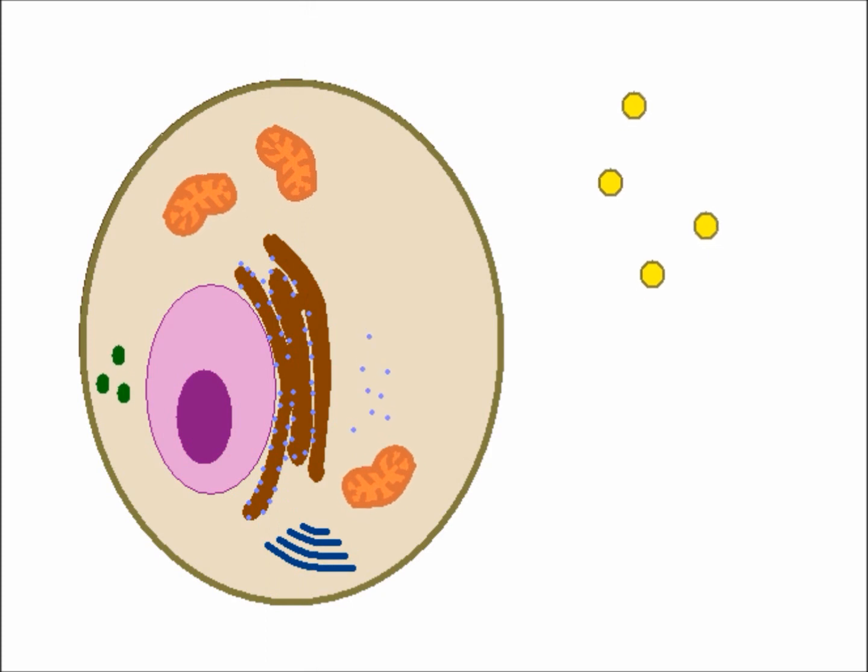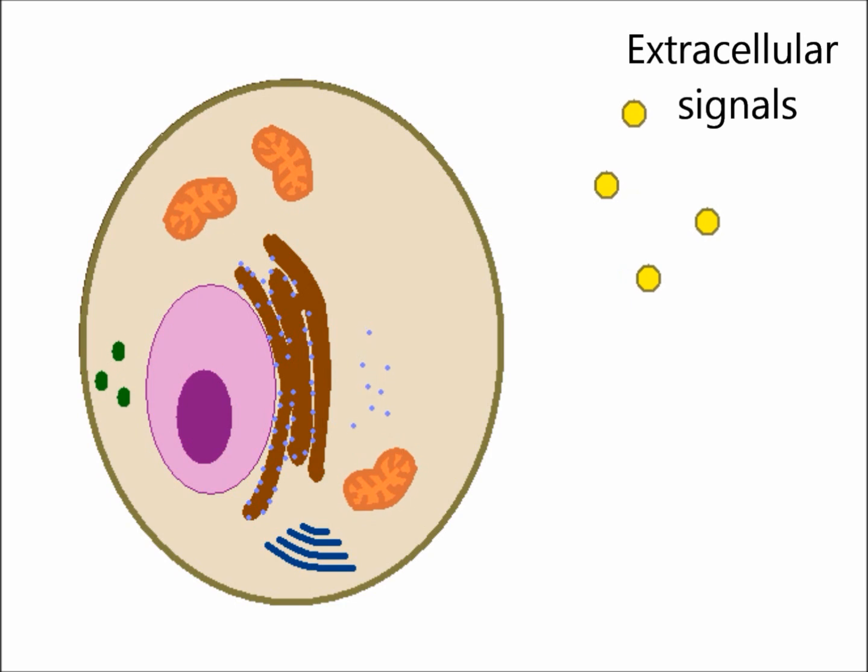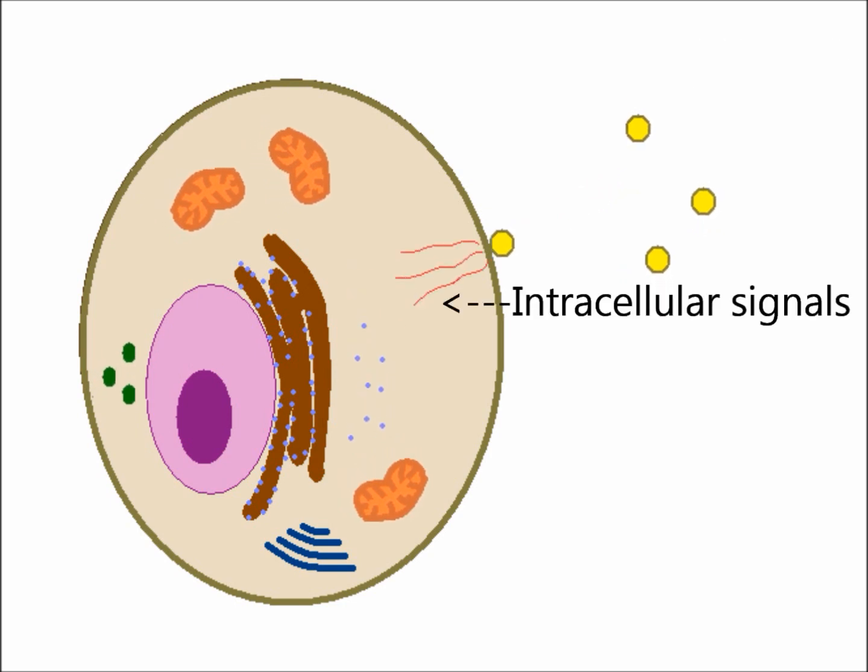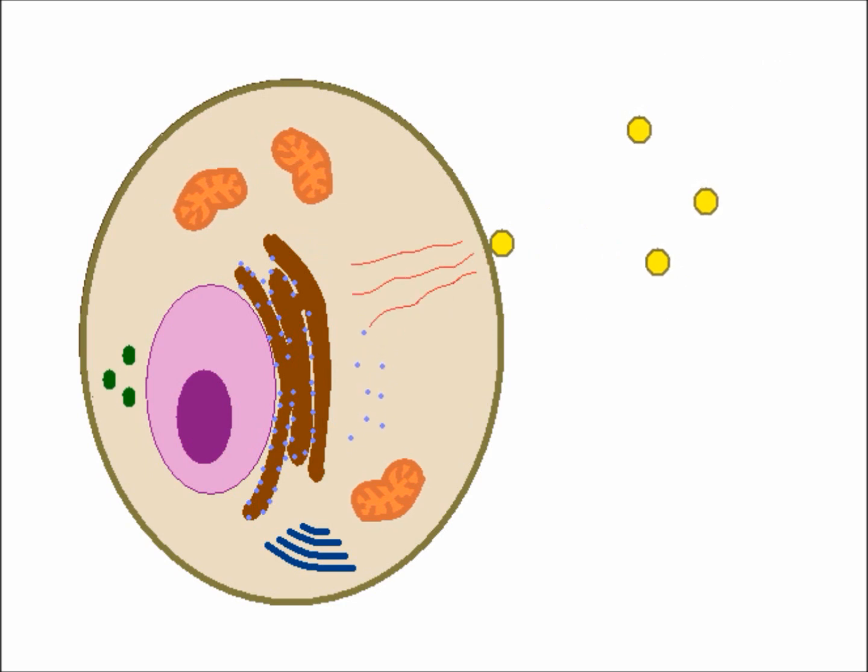Signal transduction is a method of communication used by cells in which extracellular signals are converted into intracellular signals, which in turn generates a cascade of specific cellular responses.